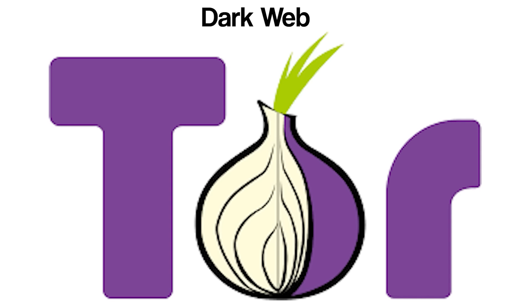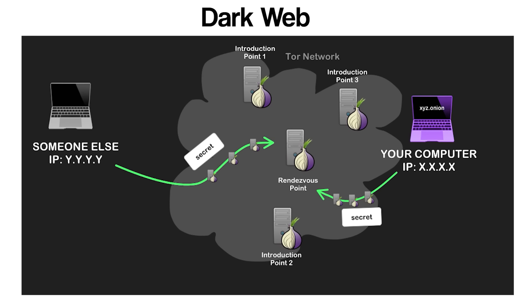These sites are hosted on an overlay network that exists on top of the regular Internet, but is only accessible via software that supports Onion routing. Onion routing works by sending data through a series of volunteer-run servers, or nodes, each of which peels away a layer of encryption like the layers of an onion. This system makes it extremely difficult to trace the origin or destination of data, ensuring high levels of privacy for both site operators and users.